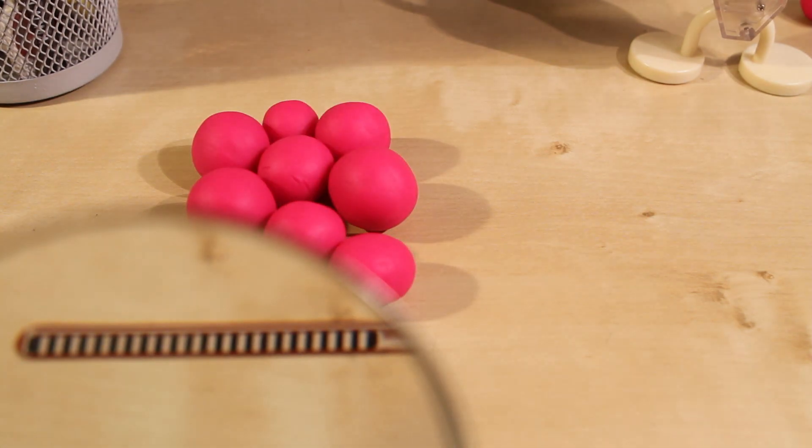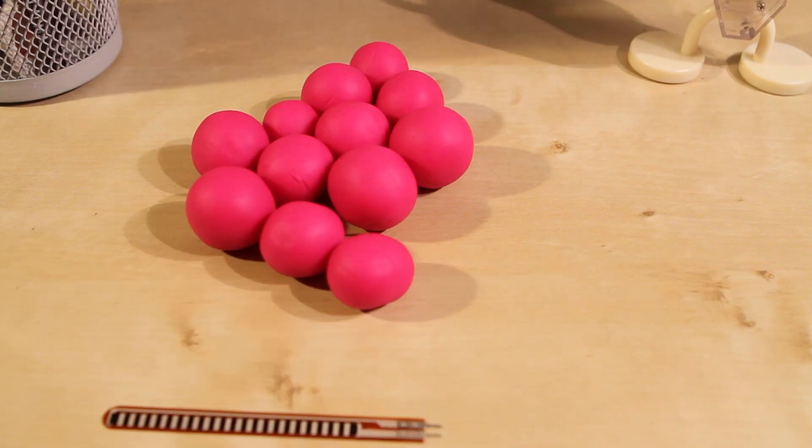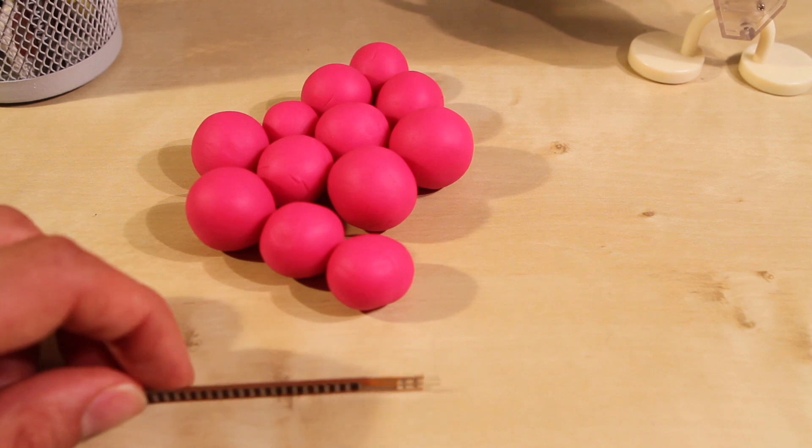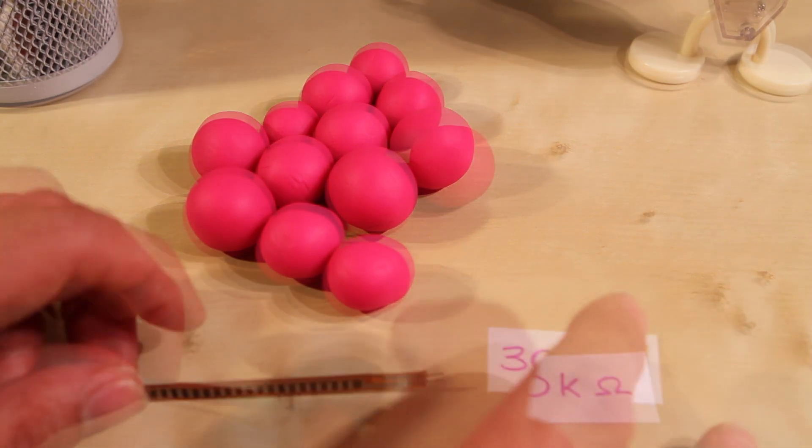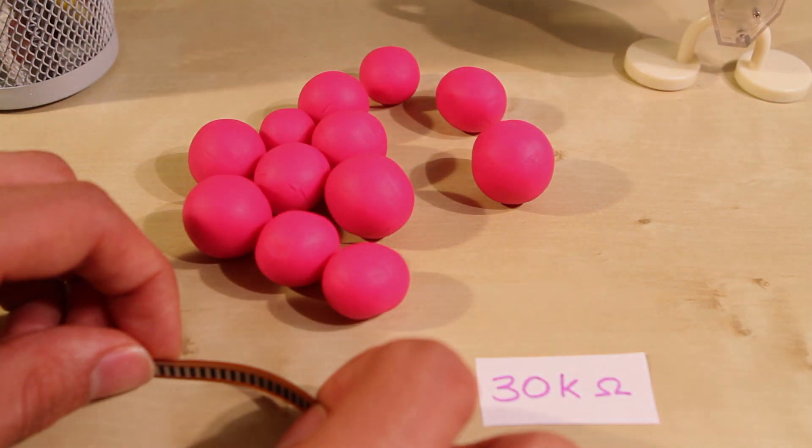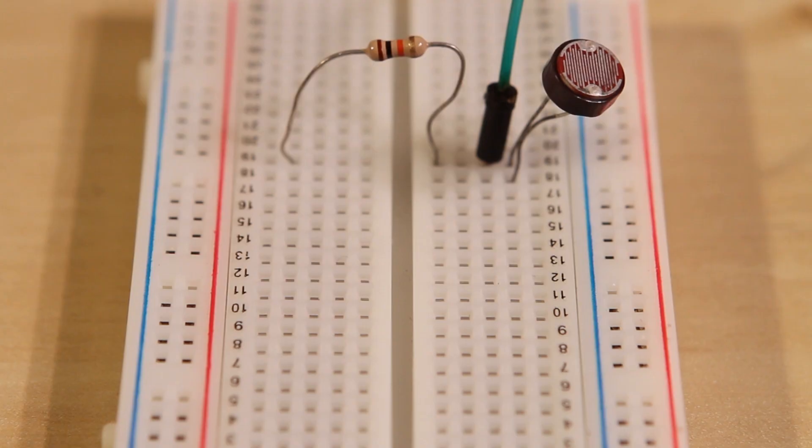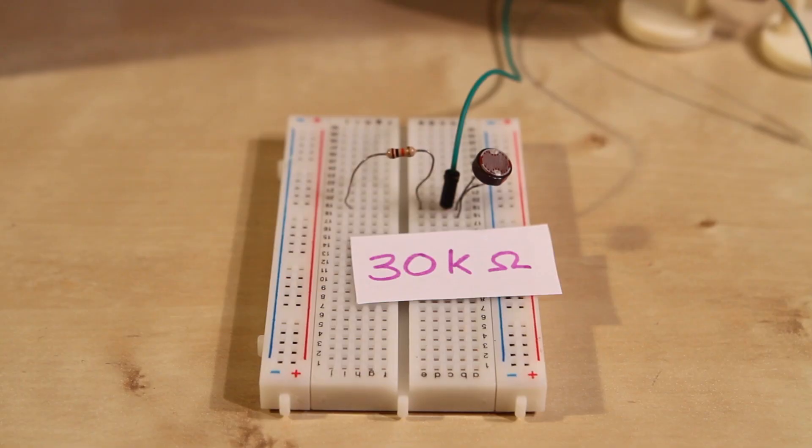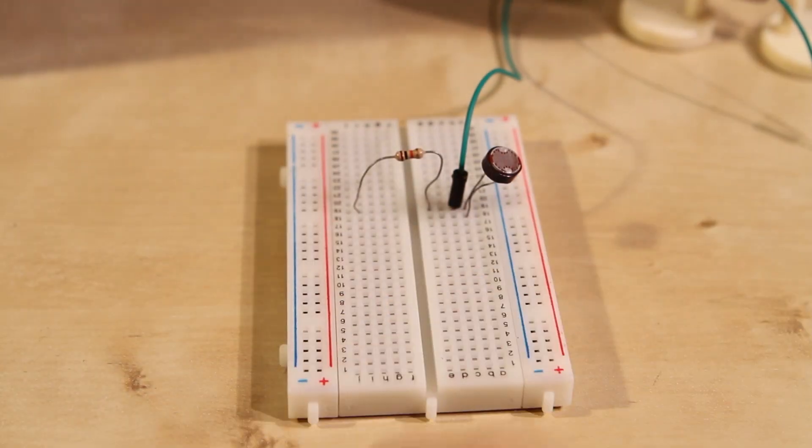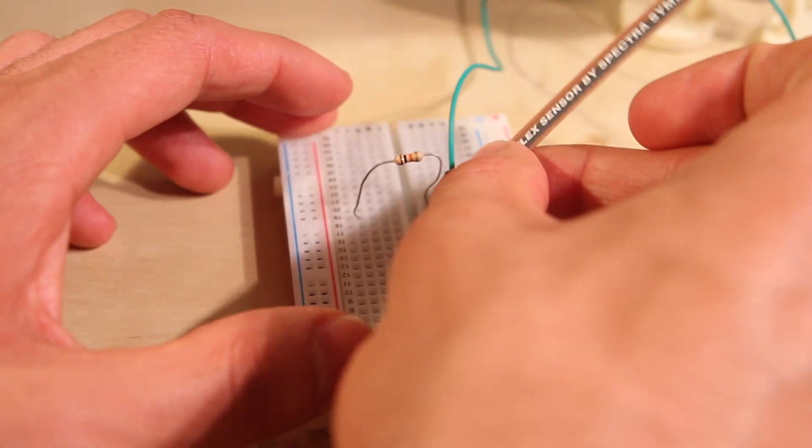Inside the flex sensor is a bunch of conductive particles. They're closest to each other when the sensor is straight, which gives them a resistance of about 30,000 ohms. But when you bend it, they spread further away from each other, making it less conductive and increasing the resistance. So it's like a photoresistor, a sensor that changes resistance. Let's use it the same way as part of a voltage divider.